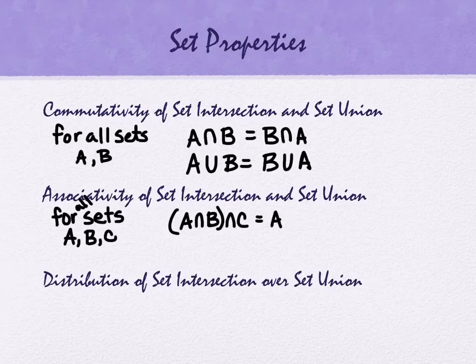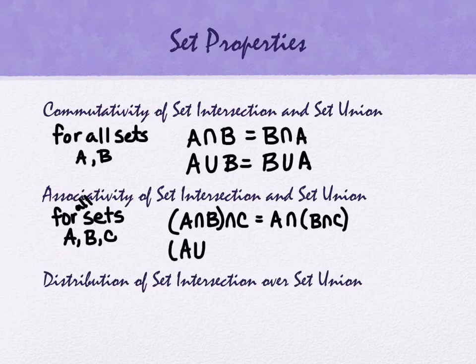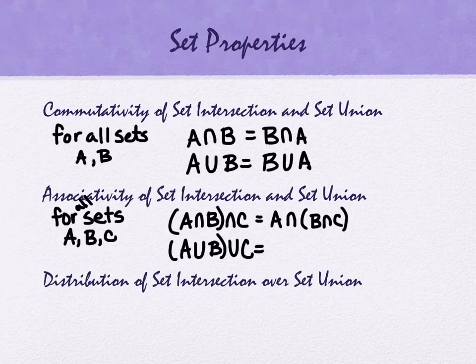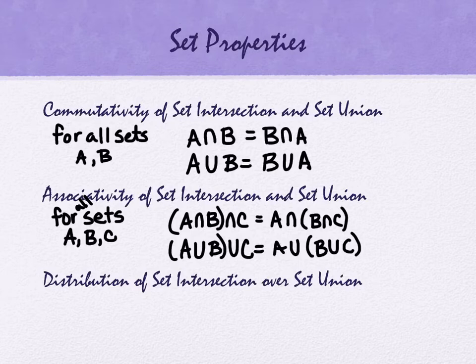If we take A intersect B intersect C, that's the same thing as A intersect B intersect C. We can do it with unions. A union B union C is the same as A union B union C.